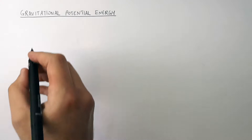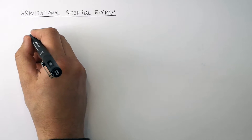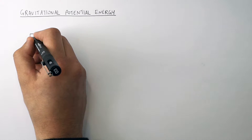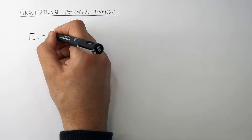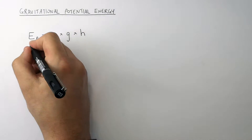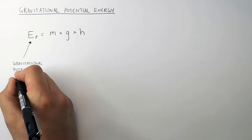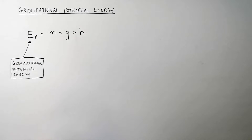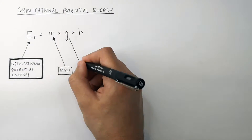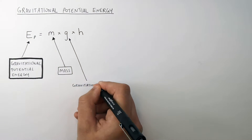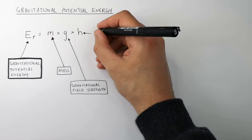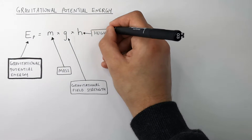It's possible to work out gravitational potential energy stored in an object. This is done using the following equation, where E equals M times G times H. E is the gravitational potential energy stored in the object, M is the mass of the object, G is the gravitational field strength experienced by the object, and H is the height above the ground.